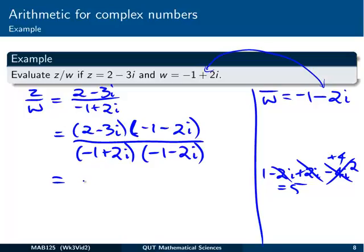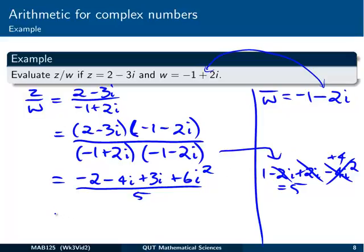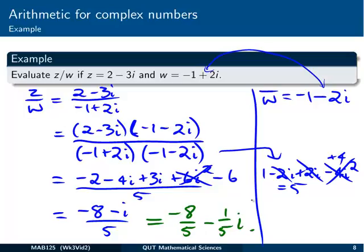Now on the top, we're going to have 2 by minus 1 is minus 2. 2 by minus 2i is minus 4i. Minus 3i by minus 1 is plus 3i. And then it's going to be 6i squared. Remember, it's all over 5. That was our result there. Okay, so let's see. 6i squared, that's going to be minus 6, because i squared is minus 1. So minus 2, take 6, is minus 8. And then minus 4i plus 3i is minus i all over 5.